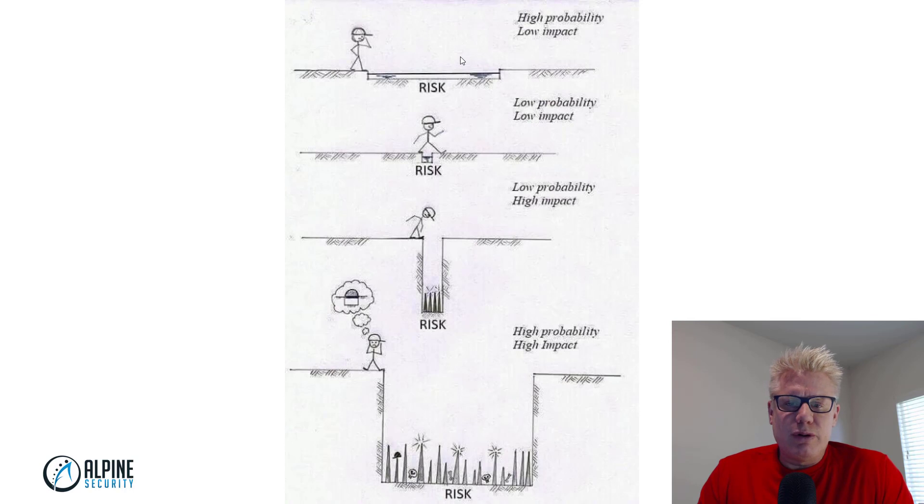So that is ultimately what risk is. It's the intersection of probability and impact. Another term you might hear for probability is likelihood. And another term you may hear for impact is consequence.